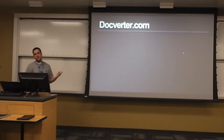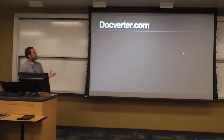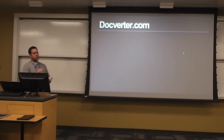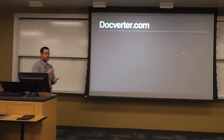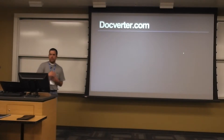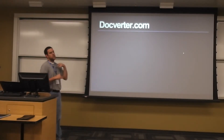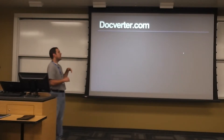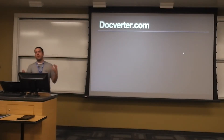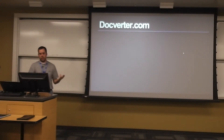Now we're at the point where we want to turn this into a book. Docverter is really cool — they've got an API that allows you to upload your whole bundle: all your files, all your images, and your style sheet. Once you've got the book designed, the style sheet says your H1s should be 25 points in Helvetica instead of Arial, for example.